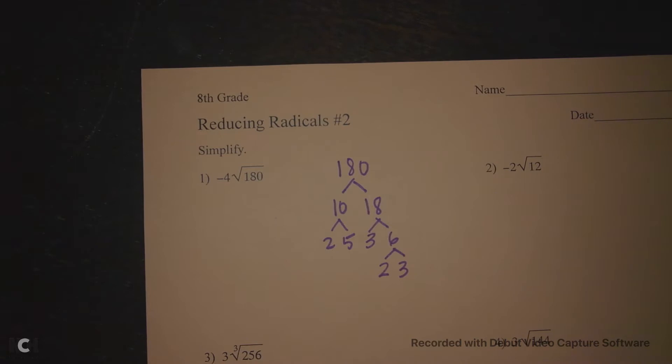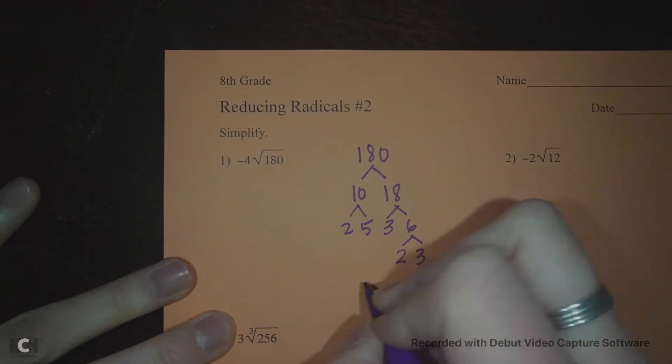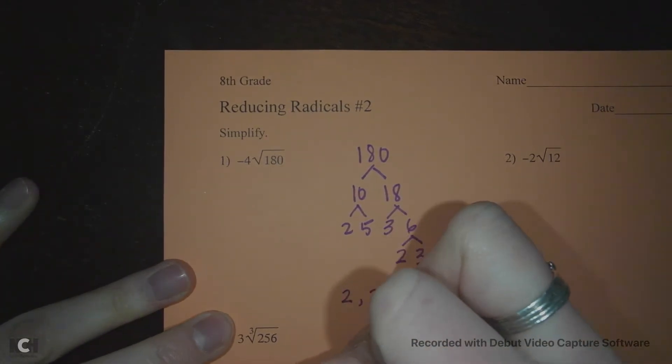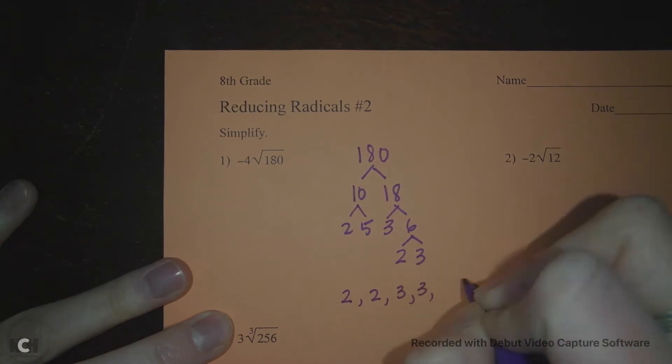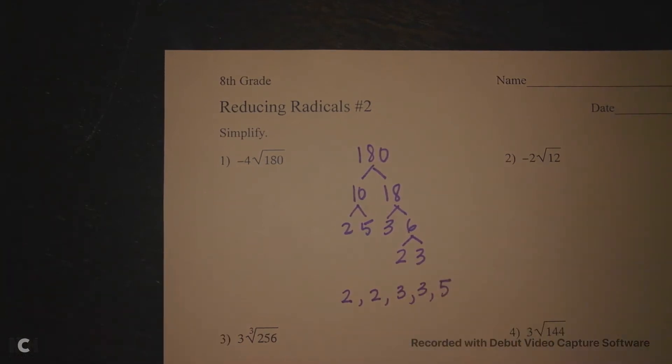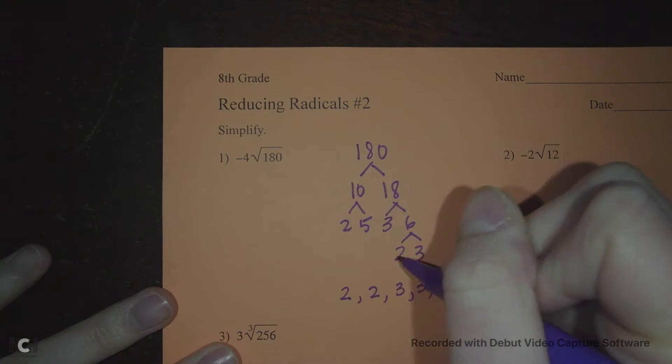Okay, so now it's really important to write your numbers from least to greatest, so we've got 2, 2, 3, 3, and 5. We're looking at all of our leaves, so all of the end of these.